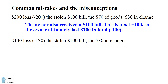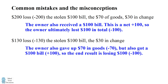Another common answer is that the owner had a $130 loss — from the stolen $100 bill and the $30 in change. The problem with this answer is it's not taking into account that the owner also gave up $70 in goods, but also got a $100 bill. When you take into account these transactions, the net result would be the owner losing $100.